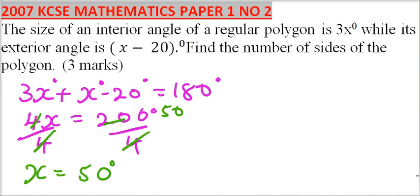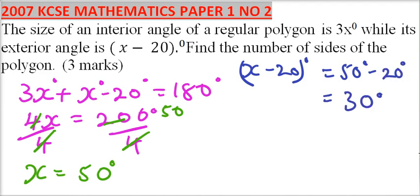The exterior angle is x minus 20 degrees, which means because x is 50, it is 50 degrees minus 20, which is equal to 30 degrees. The exterior angle is the same as the angle at the center of the regular polygon.